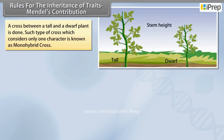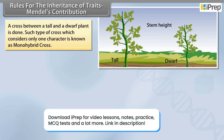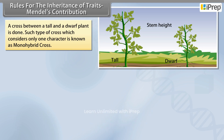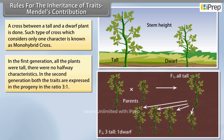A cross between a tall and a dwarf plant is done. Such a type of cross which considers only one character is known as a monohybrid cross. In the first generation, all the plants were tall — there were no halfway characteristics.